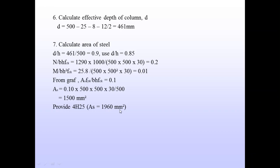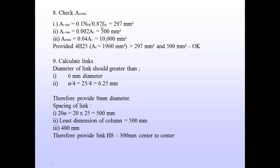We provide the nearest reinforcement: 4H25, giving an area of 1960 mm². We then check whether this provided steel area is within limits. The minimum steel area equals 0.1 × N_Ed divided by 0.87 × f_yk, which is 297 mm². The maximum steel area is 0.04 × area of concrete = 10,000 mm². Since 1960 mm² is greater than 297 mm² and less than 10,000 mm², the provided area of steel is sufficient.